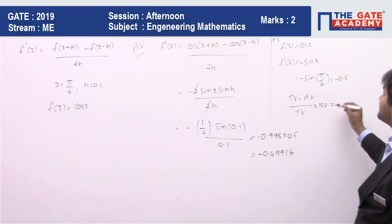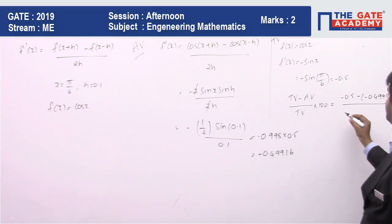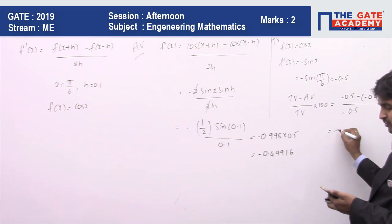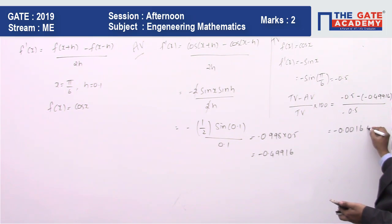So you can substitute these values: [-0.5 - (-0.49916)] / (-0.5). So this value comes to -0.0016 multiplied by 100.